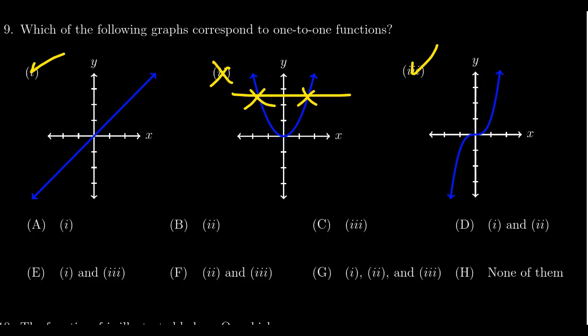Graph number three passes both the vertical and horizontal line test. So it is, in fact, a one-to-one function.